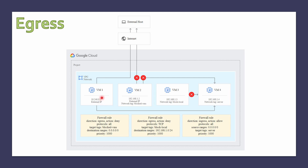VM1 can send traffic to any destination, but it is also subject to the ingress rules of the destination VMs. VM1 can send traffic to VM4 because VM4 has an ingress rule allowing connections from any IP address. Since VM1 has an external IP address, it can also send traffic to the internet.